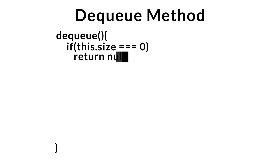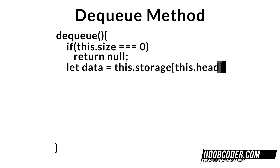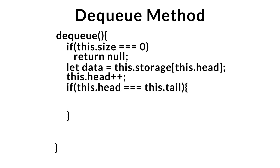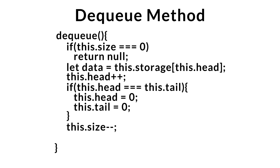Now let's go on to our DQ method. Our DQ method has no parameters and removes and returns the data from the front of the queue. First, we check if our queue is empty by seeing if size equals zero — if it is, we return null. If not, we save the data at the front of the queue before removing it. We advance our head index to the next position to remove it. Then for memory management, we check if the head index equals the tail index — if so, we reset both to zero. We decrement the size, then return the data.